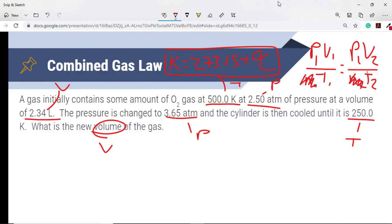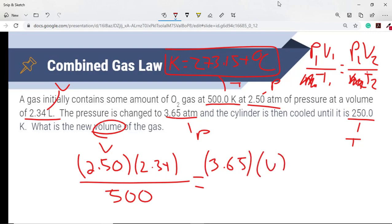Now we just simply plug in our variables and solve from there. Make sure that they are all the same type of unit, which they are. Our initial pressure, our volume over our temperature is equal to our new pressure times our new volume, which is unknown, divided by our new temperature. And now we just algebraically solve for V.